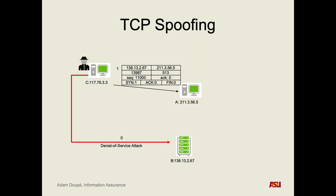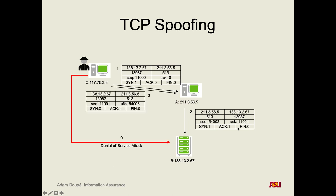In summary: we do a denial-of-service attack to take out Alice's machine, we send a spoofed SYN packet from Alice to Bob, Bob replies with a SYN-ACK, we send the correct ACK packet back, and now we've established a connection. The natural extension of IP and UDP spoofing, but we must get the sequence number right, otherwise we can't spoof a TCP connection.